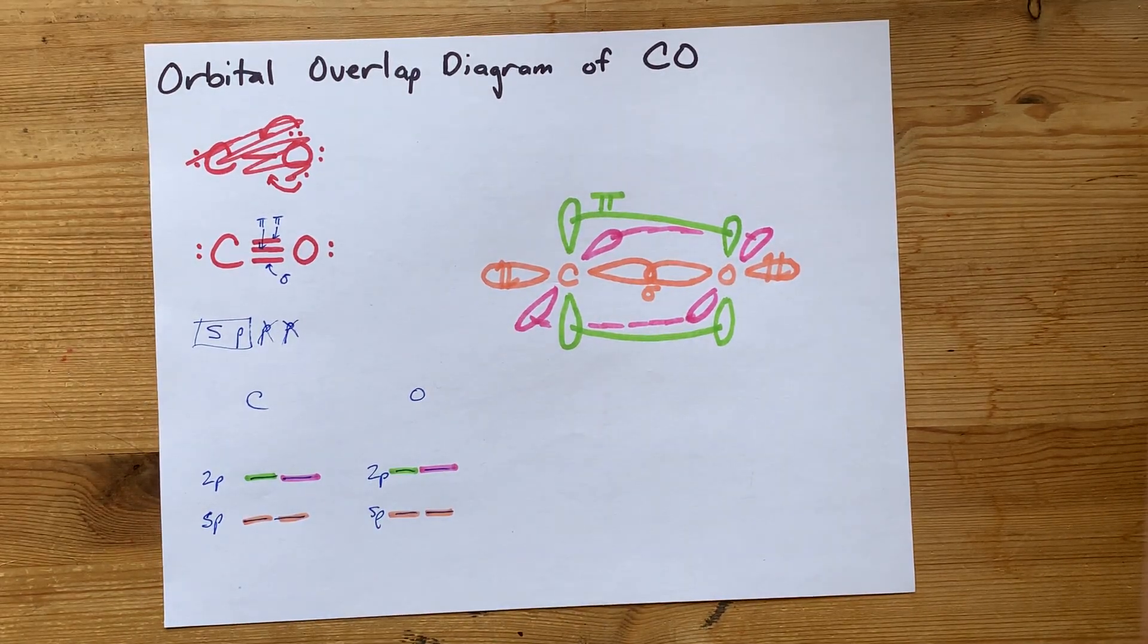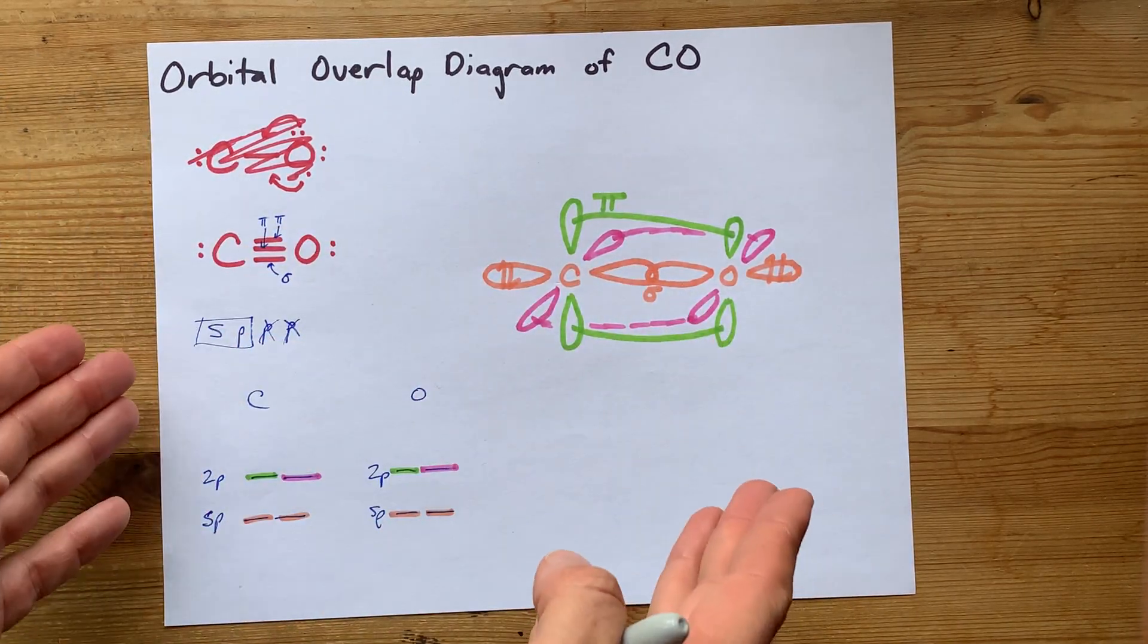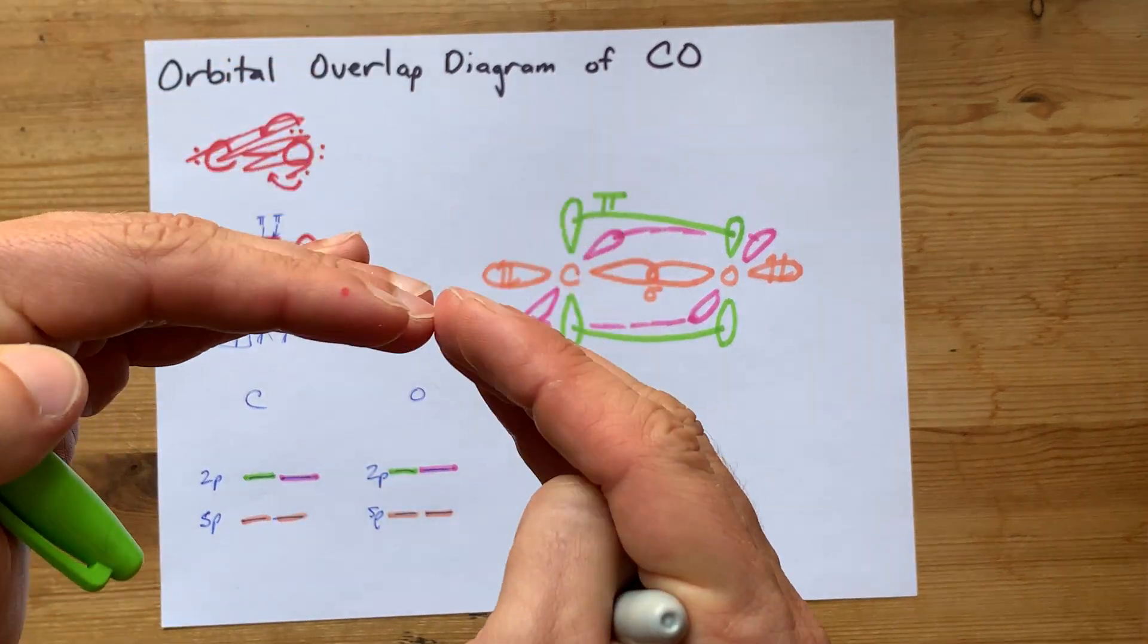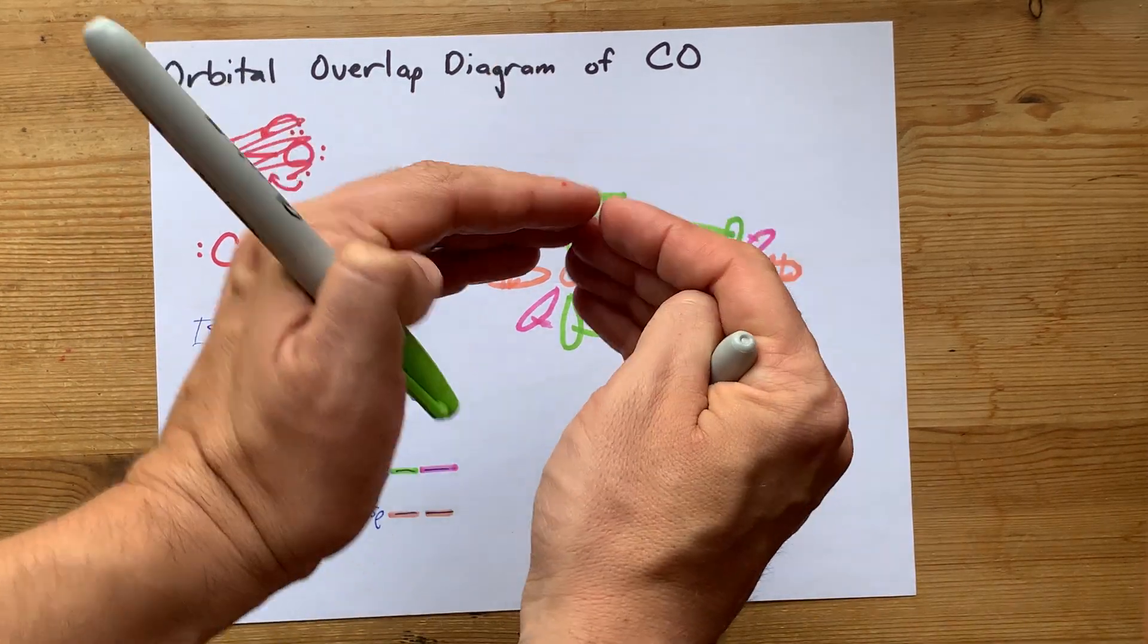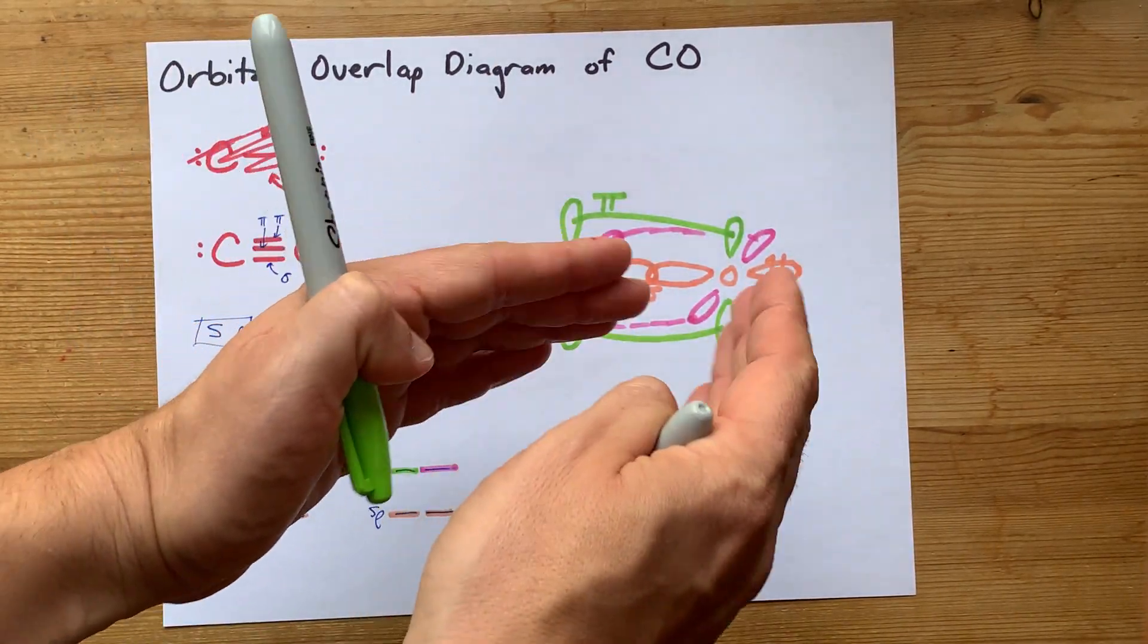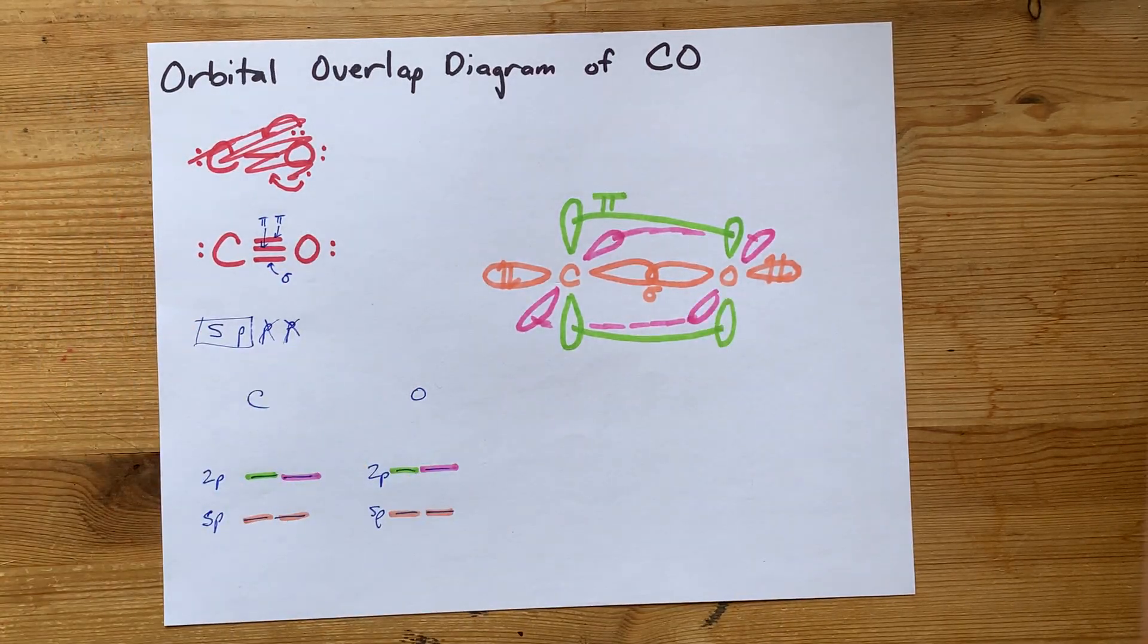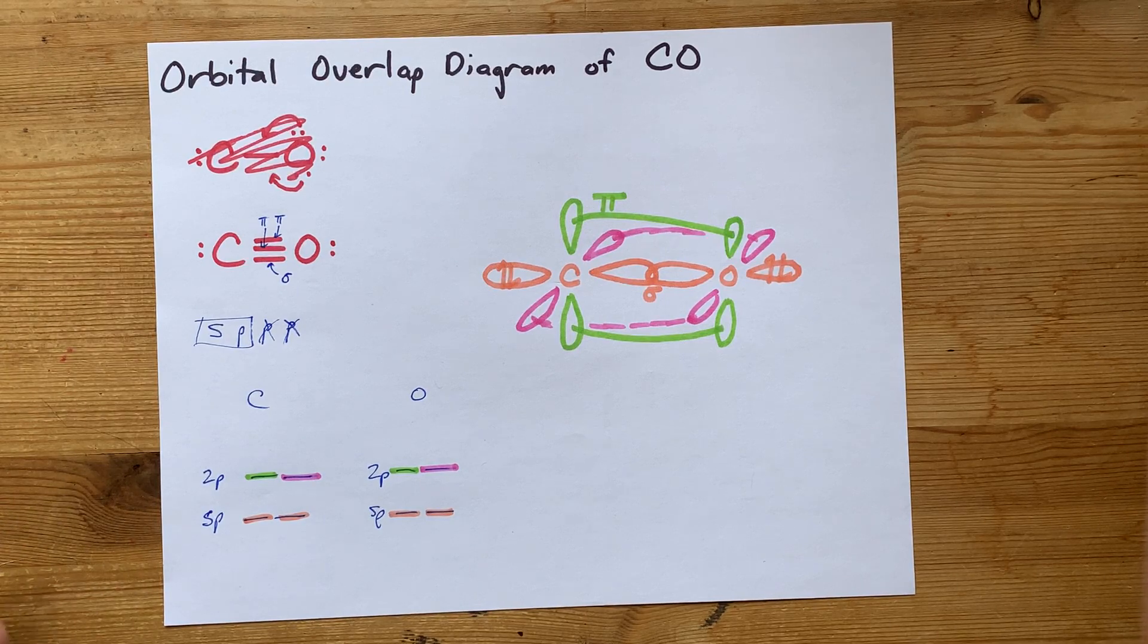Point here is that you've got two hybridized orbitals, SP orbitals, that are arranged linearly. Then you've got a sideways overlap for one pair of 2P orbitals. And then you've got another side-by-side overlap, but on a different axis for the other 2P orbitals. If you're being asked for the orbital overlap diagram of carbon monoxide, this is almost exactly what you're being asked for.